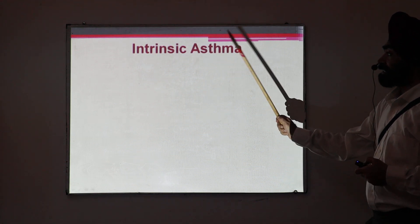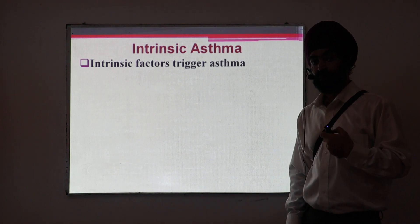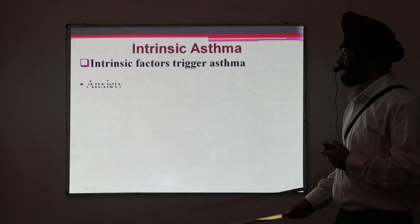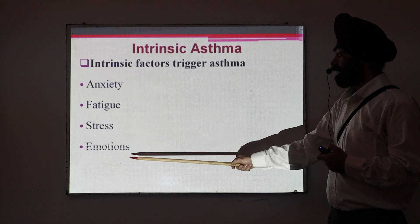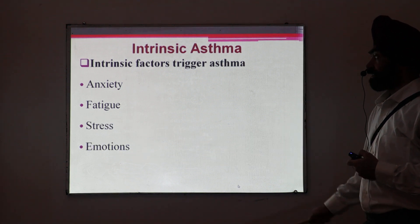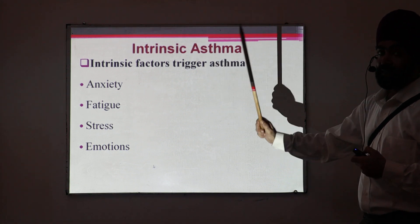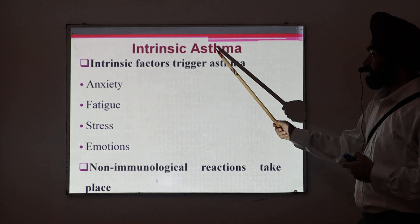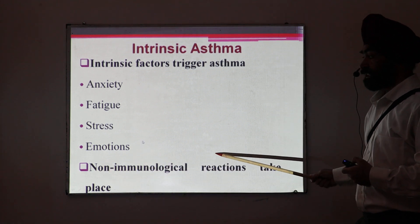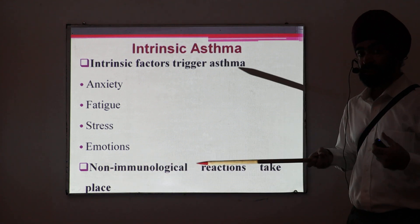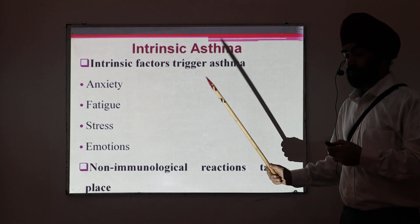Now there is intrinsic asthma, where all the factors are present inside the body — endogenous factors like anxiety, fatigue, stress, or emotions. These can lead to asthma, and then we say it is intrinsic asthma. In intrinsic asthma, the reactions are mainly non-immunological; there is bronchoconstriction with more parasympathetic involvement instead of immunological reactions.